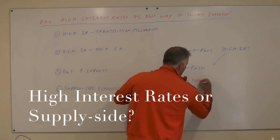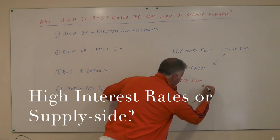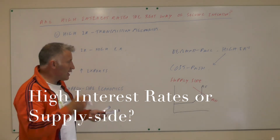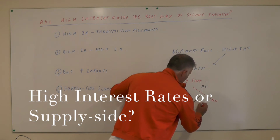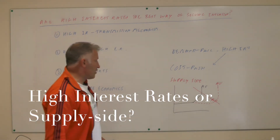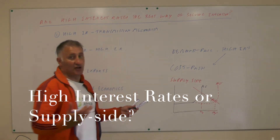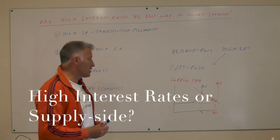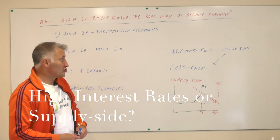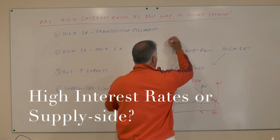If we use supply side economics with a positive output gap — where the AS curve is here and aggregate demand is way up here causing high inflation — shifting the AS curve out means we avoid inflation and move from NY to NY-dash. However, as every A-level student knows, supply side policies take a long time to work through the economy, so it's not always possible in the short run. In the short run, the most effective way of getting rid of demand pull inflation is through high interest rates.